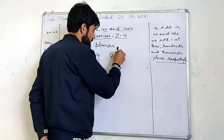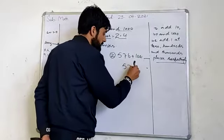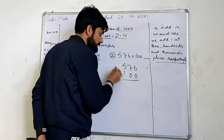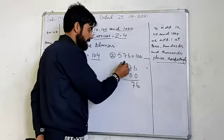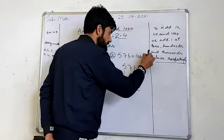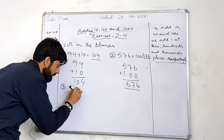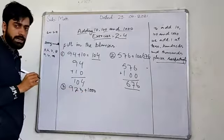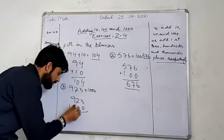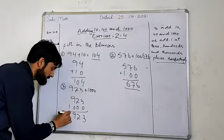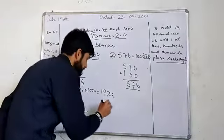The second part is 576 plus 100. The third part is 923 plus 1000. Here you can see the columns: 923 plus 1000 — looking at the 1s place, 10s place, 100s place, and 1000s place.